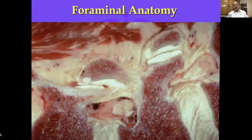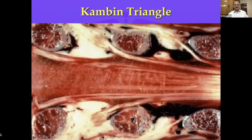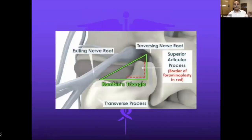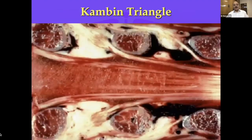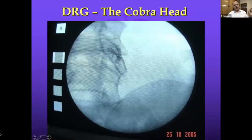The traditional 'safe triangle' is actually unsafe many times in our practice. The safer approach is Kambin's triangle, where the DRG lies. Many times the communicating ramus — in anterior disc syndrome — should be blocked or treated. The safe triangle approach versus Kambin's triangle approach for root blocks achieves the same thing but with different safety profiles. Always approach from Kambin's angle for the best access with least risk.